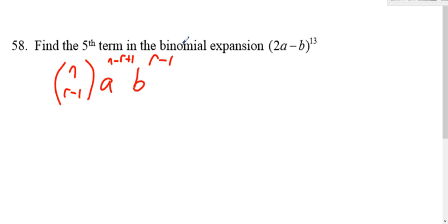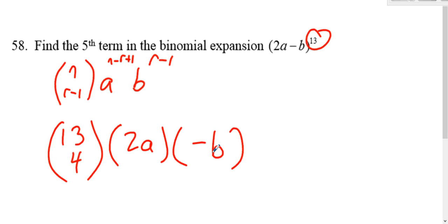Got to find the fifth term of something to the 13th power. That's n equals 13. 5 minus 1 is 4. The first term is 2a. The second term is negative b. The bottom number here, the 4, the r minus 1, is the exponent on the second term.